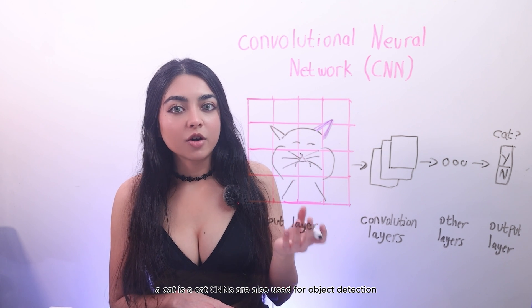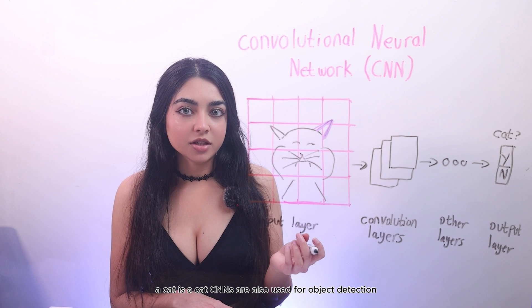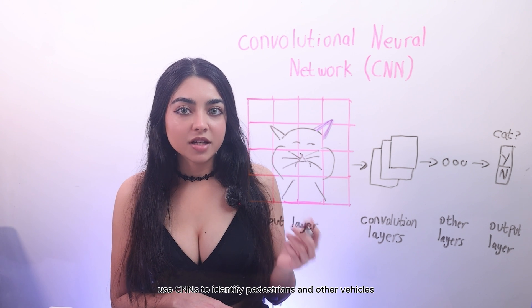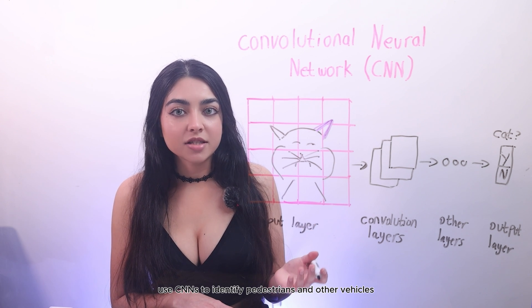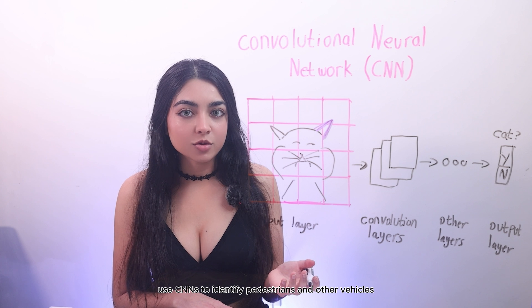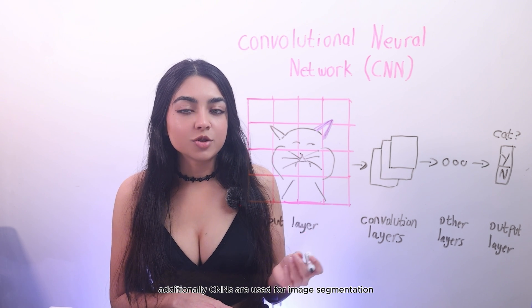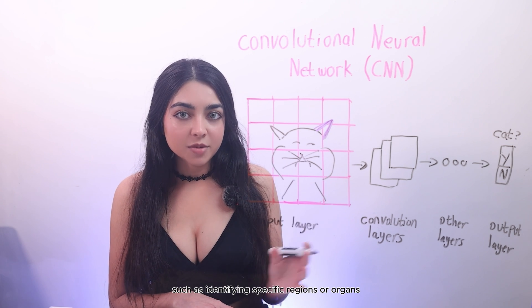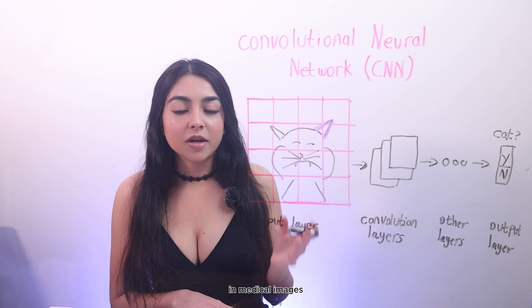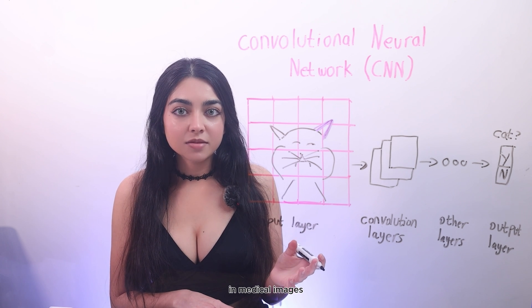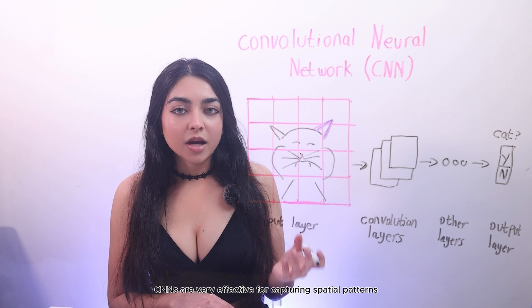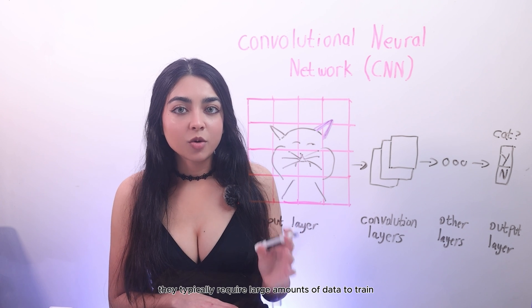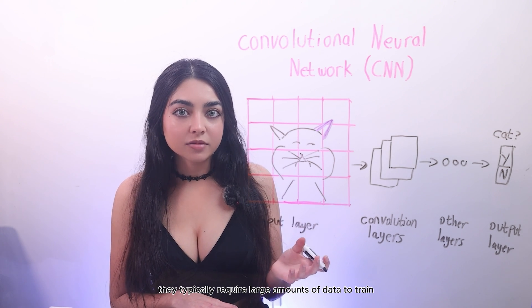CNNs are also used for object detection — for example, self-driving cars use CNNs to identify pedestrians and other vehicles. Additionally, CNNs are used for image segmentation, such as identifying specific regions or organs in medical images. CNNs are very effective for capturing spatial patterns; however, they typically require large amounts of data to train.